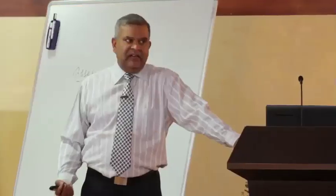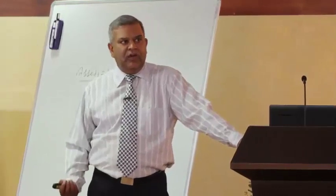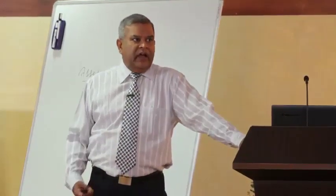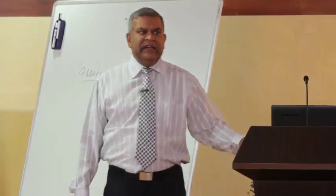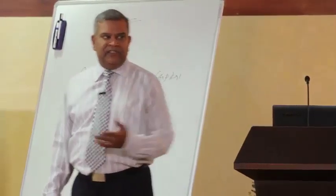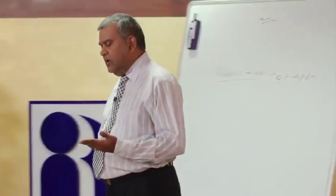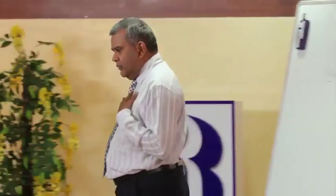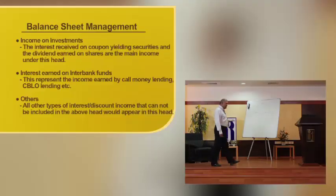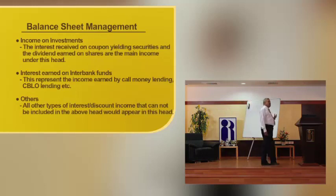The third item is interest earned on inter-bank lending. When the bank has surplus funds, it lends through call money or CBLO. That item is your interest income from inter-bank lending — this is income not from corporate lending but from CBLO lending and similar instruments. Any other income which cannot be grouped under the above heads is taken to 'other interest income.' So far, we have discussed the bank getting interest from advances and investments — that is called interest income.